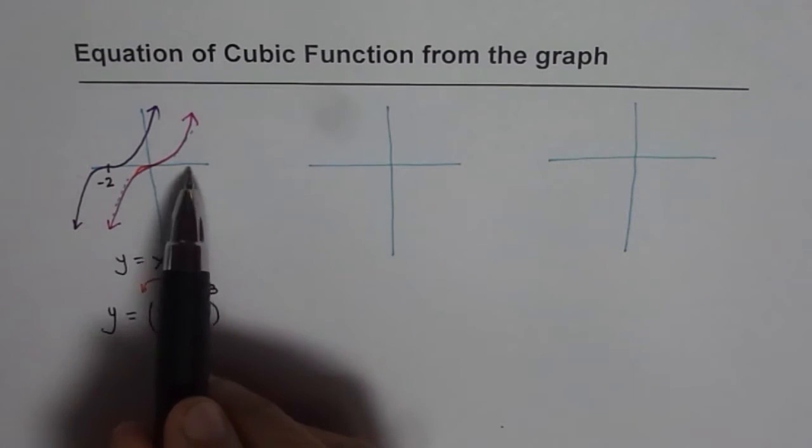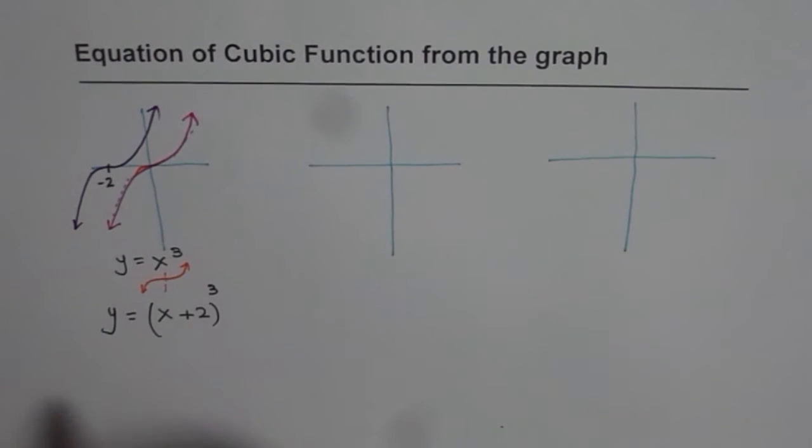So translating left means plus 2. If I would have translated right, it would have been minus 2 here. Similarly, if I translate this up and down, we know transformations, we can add and subtract and then get the equation. So likewise, we can get transformed equation of our parent function.